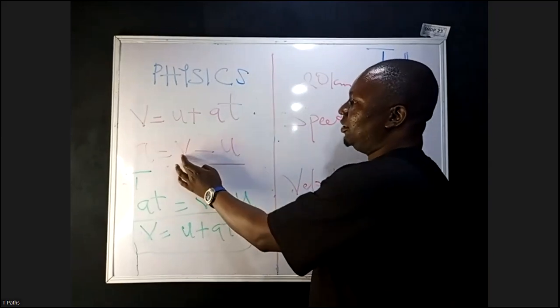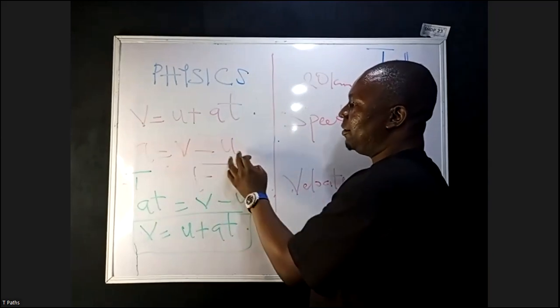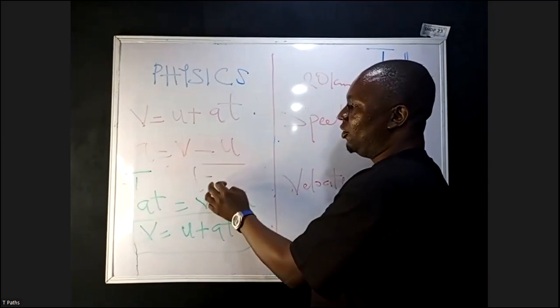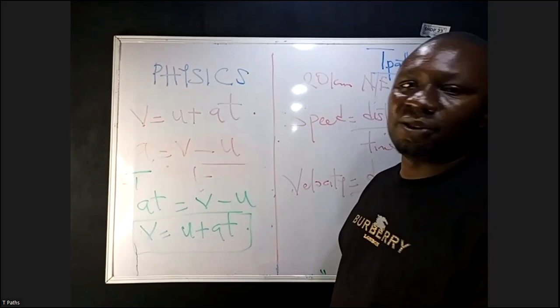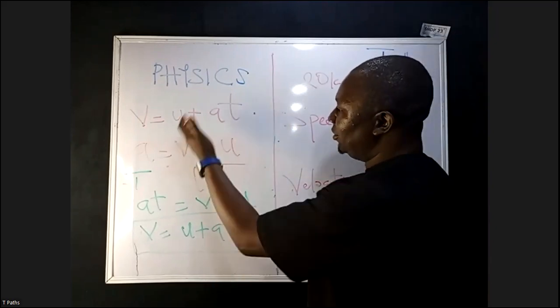When we say change in velocity, it's final velocity minus initial velocity, all over T. That is your acceleration. Therefore we make V the subject of the formula. Very important.